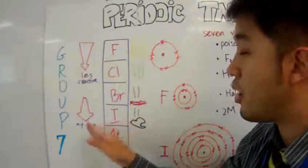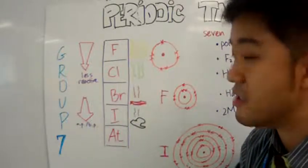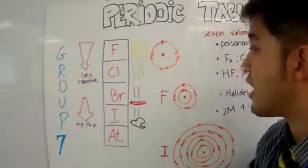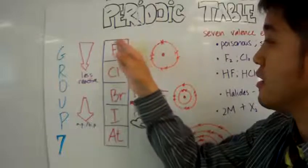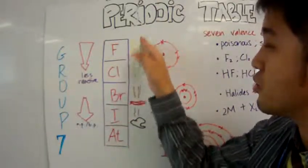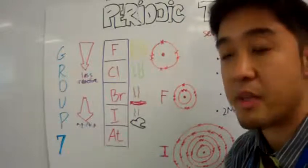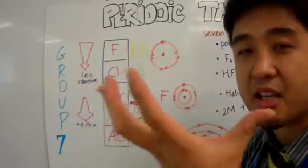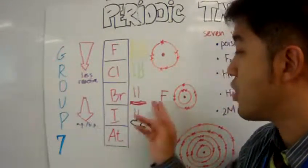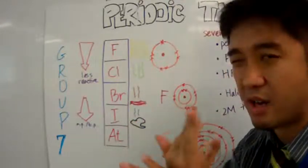Now the boiling point and melting point of Group 7 halogens increases as you go down the group. If you look at the physical properties, fluorine and chlorine exist as gases in their diatomic form. Fluorine is a very light yellow gas, chlorine is a greener yellow gas, and bromine is a red-brown liquid with brown-yellow gas coming out.